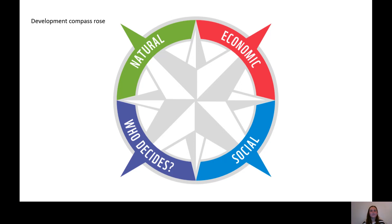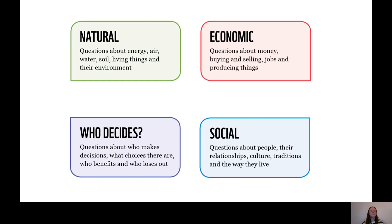Well done Year Five. Natural looks at things to do with the natural environment: energy, air, water, soil, living things and the environment. Economic covers questions around money, buying, selling, jobs, and producing things. Social covers things about people, their relationships, culture, traditions, and the way they live.